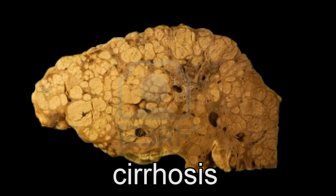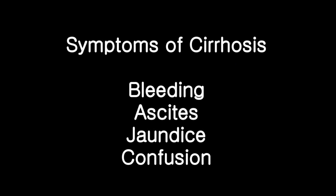In cirrhosis, the liver is unable to function properly due to an insufficient number of functioning liver cells. Patients with cirrhosis often develop problems such as bleeding, fluid in the abdomen called ascites, yellowing of the skin called jaundice, and even confusion and altered level of consciousness.